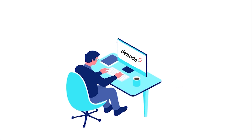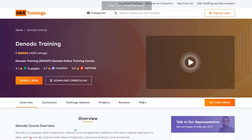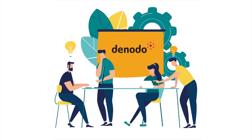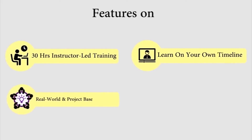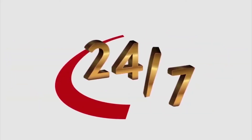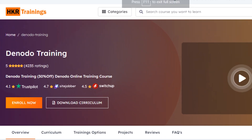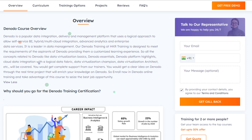The course is very easy to do. In HKR Trainings, there are practical trainings available with an industrial expert team. Features include 30 hours of instructor-led training, learn on your own timeline, real-world and project-based learning, lifetime LMS access, and 24/7 support. The course content covers Denodo developer overview, Denodo developer basics, and Denodo developer advanced concepts.